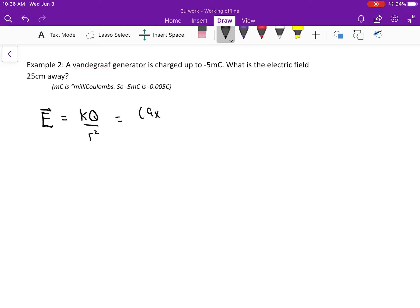The k is always 9 times 10 to the 9, that's just what it is for electricity. Later on in university, sometimes we change that number, but for now, 9 times 10 to the 9.